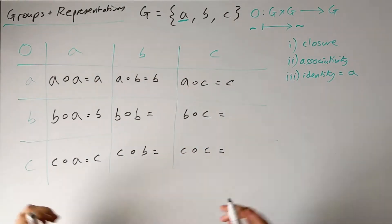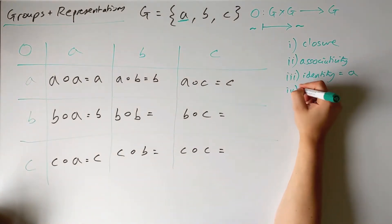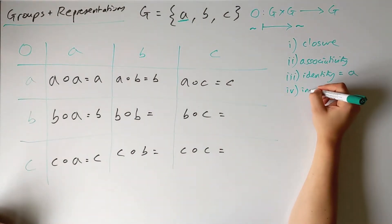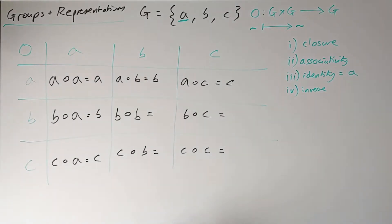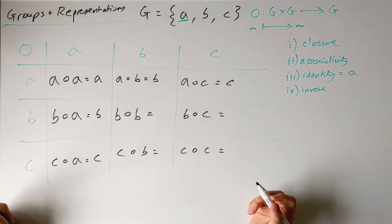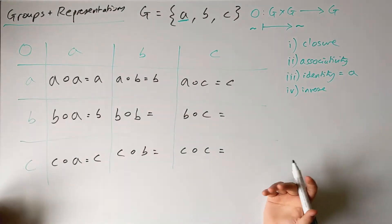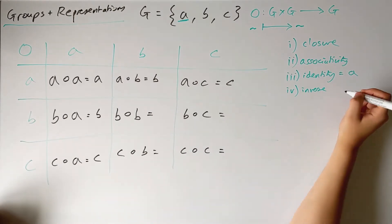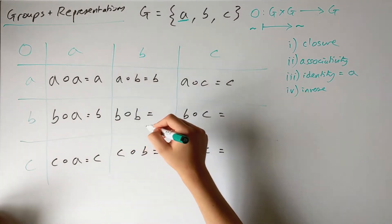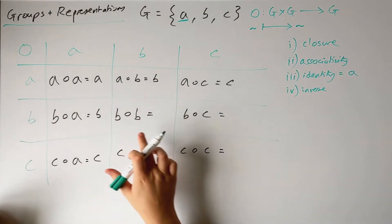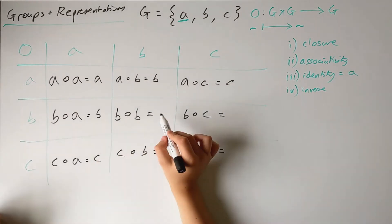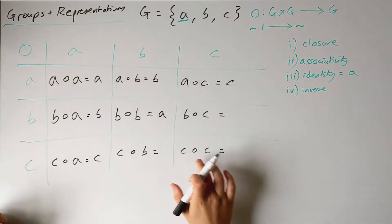Finally, we have the existence of an inverse. The inverse element for every element, when you compose it with its inverse, returns you to the identity element. I'm just going to declare that every element is its own inverse, so when we have b composed with itself, that returns us to the identity, and similarly with c.